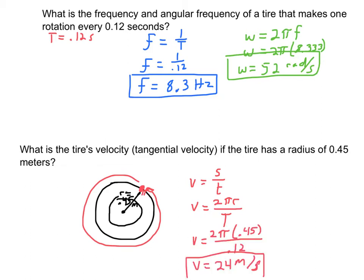Substituting in the radius and the period from this same tire as the first problem, I come out with a velocity of around 24 meters per second. That's how quickly the point on the edge of the tire is going around — which, by the way, would be the velocity of the car.